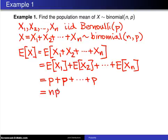This is a much easier way to derive the mean of the binomial distribution than what we had to work with back in Chapter 4, where we didn't have this nice result that the expected value of the sum is the sum of the expected values.